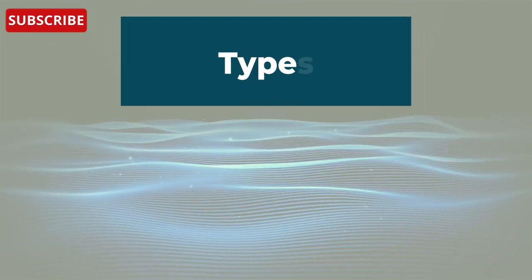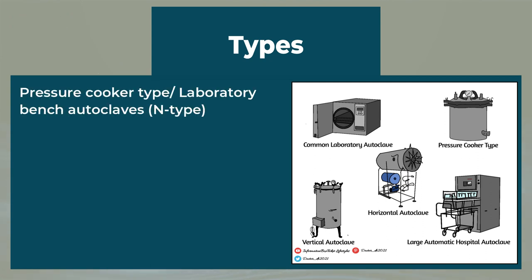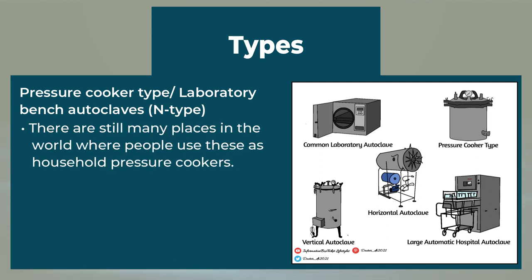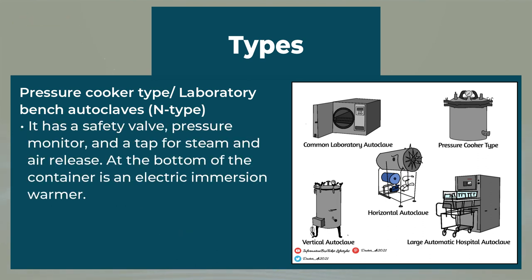Now let's see the types of autoclave. There are several different types available, including the pressure cooker type, also known as laboratory bench autoclaves. These are still used in many places as household pressure cookers. A more contemporary version has a metal compartment with a secure metal dock that can be closed using a rubber gasket. It has a safety valve, pressure monitor, a tab for steam and air release, and an electric immersion heater at the bottom.